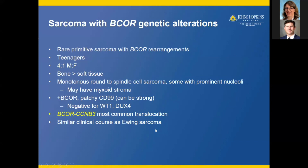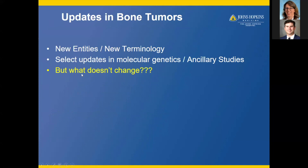Now let's get into the updates in bone tumors. We'll talk about some new entities and new terminology, select updates in genetics and ancillary studies. But importantly, what doesn't change? Radiology. You always need good radiology correlation to make an excellent diagnosis. Morphology doesn't change really either, but radiology correlation remains essential.